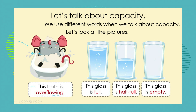We can see that the mouse has put a bit too much water in the bath, and now the water is going outside of the bath. The second one: this glass is full. If we look at the glass, we can see that the water is all the way to the top. So we say that it is full. Another example: if you eat too many sweets or snacks, you will say my stomach is full.